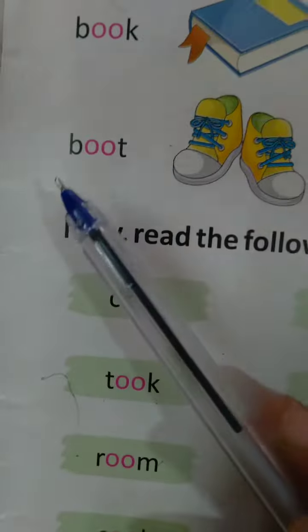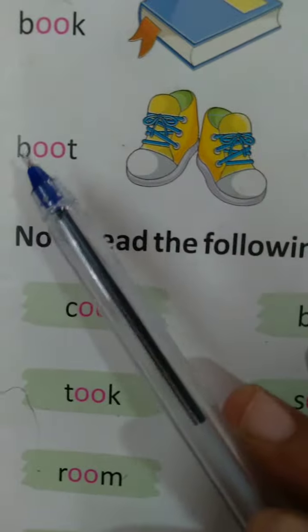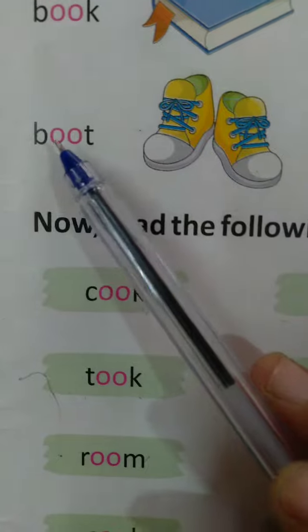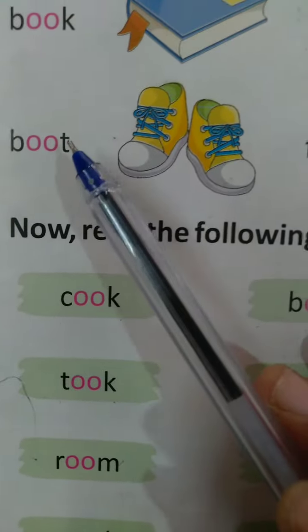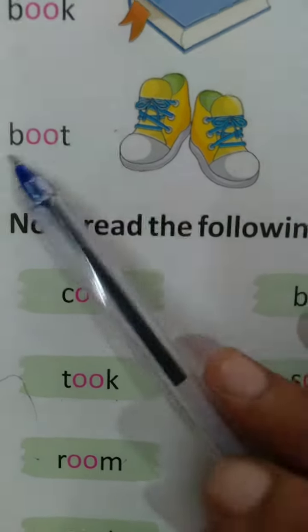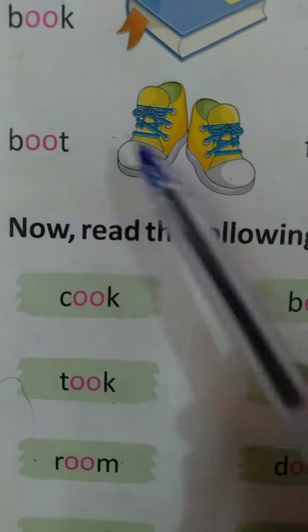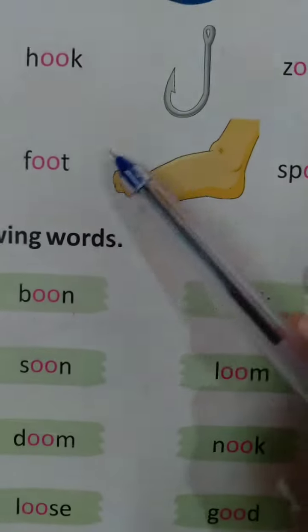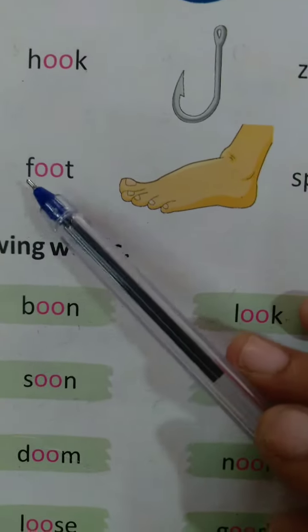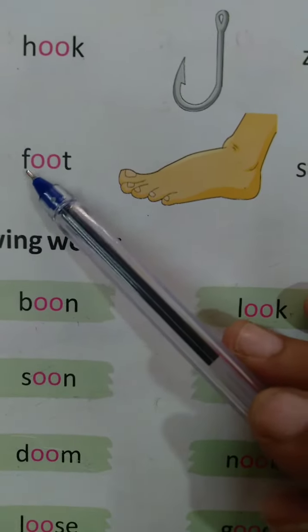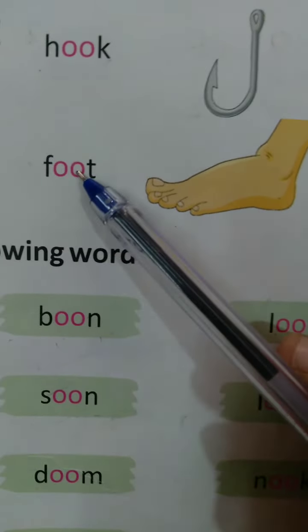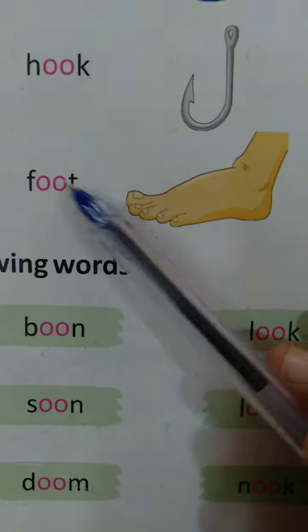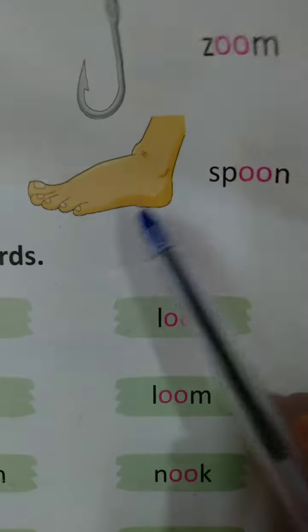Next is Boot. B double O T — Boot. Boot means Jute. Next is Foot. Foot means Pad.